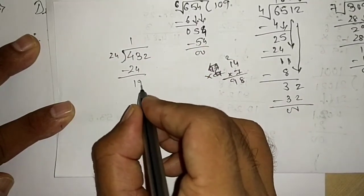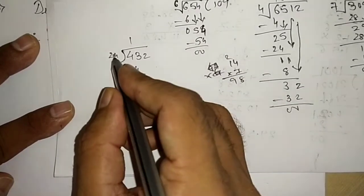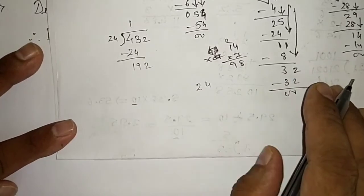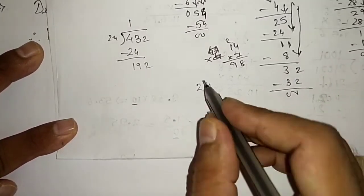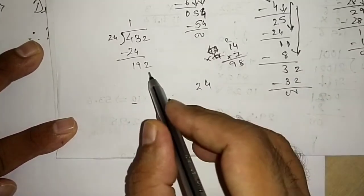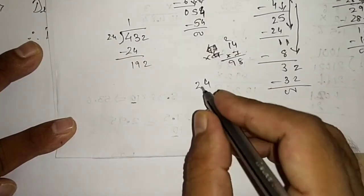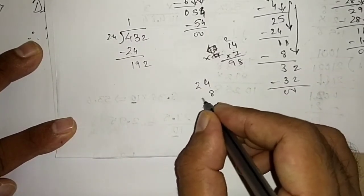24 once is 24. 16 plus 3 is 19. 192. Now we will see if 24 goes into 192. We will multiply 24 by such a number that the unit's place is 2. So what will it be? It will be 8, for 8 times 4 is 32.